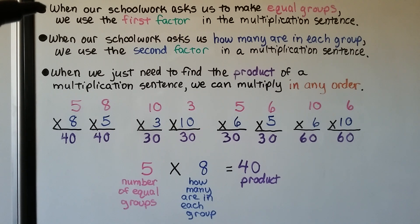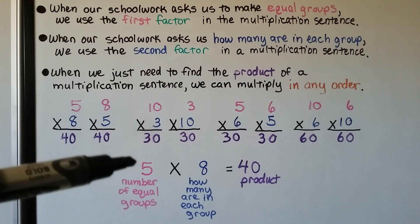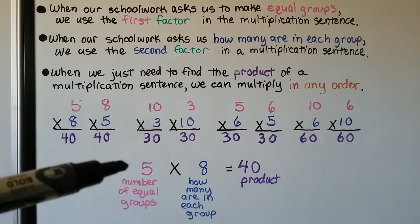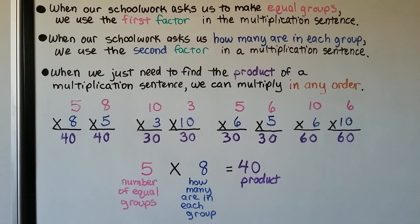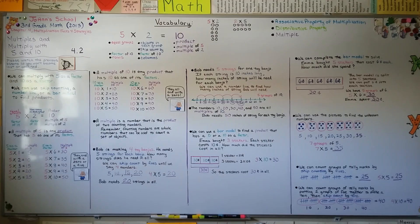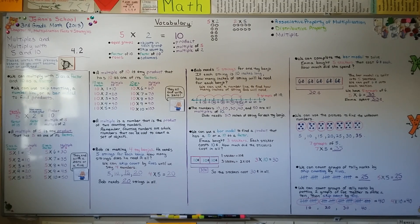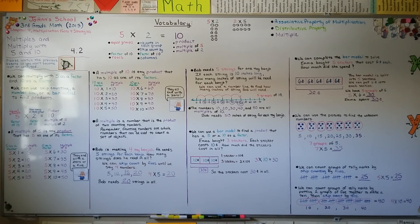It's different if your schoolwork asks you to make equal groups — then you use the first number. If it's asking how many are in each group, you use the second number. Remember, a multiple is just a product that has that number in the multiplication sentence. So 20 is a multiple of 10 because it has a 10 in 10 times 2.